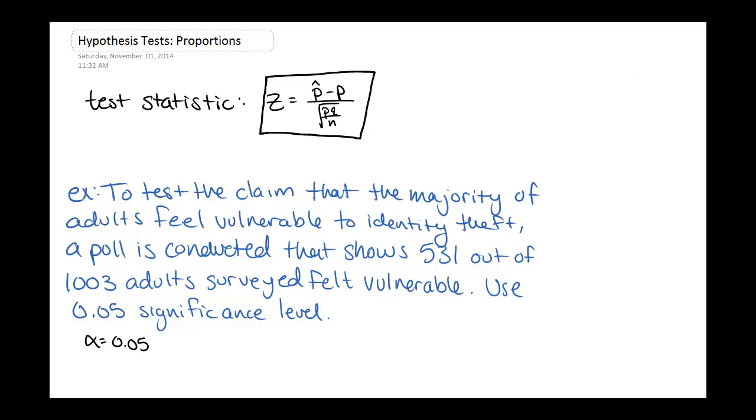So we've got an example here. We want to test the claim that the majority of adults feel vulnerable to identity theft. And in order to do that, we're going to take a poll. A poll is conducted, and it shows that 531 people out of 1,003 surveyed felt vulnerable to identity theft. And we're going to use a 0.05 significance level.